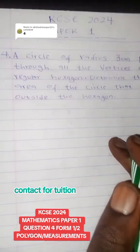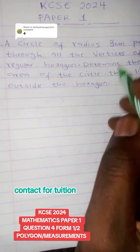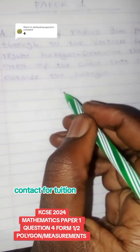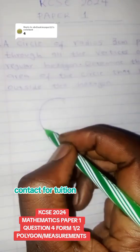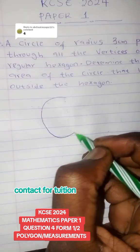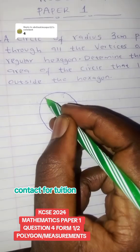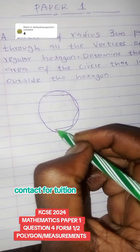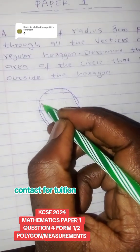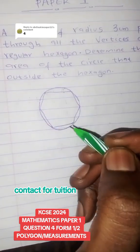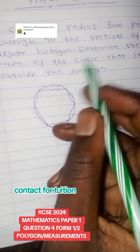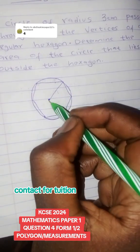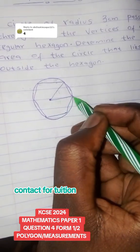Question four: you are told that a circle of radius three centimeters passes through all the vertices of a regular hexagon. Let me draw the circle and hexagon — a hexagon is a figure that has six sides. The radius, meaning the distance between any two points on the circle, is three centimeters.